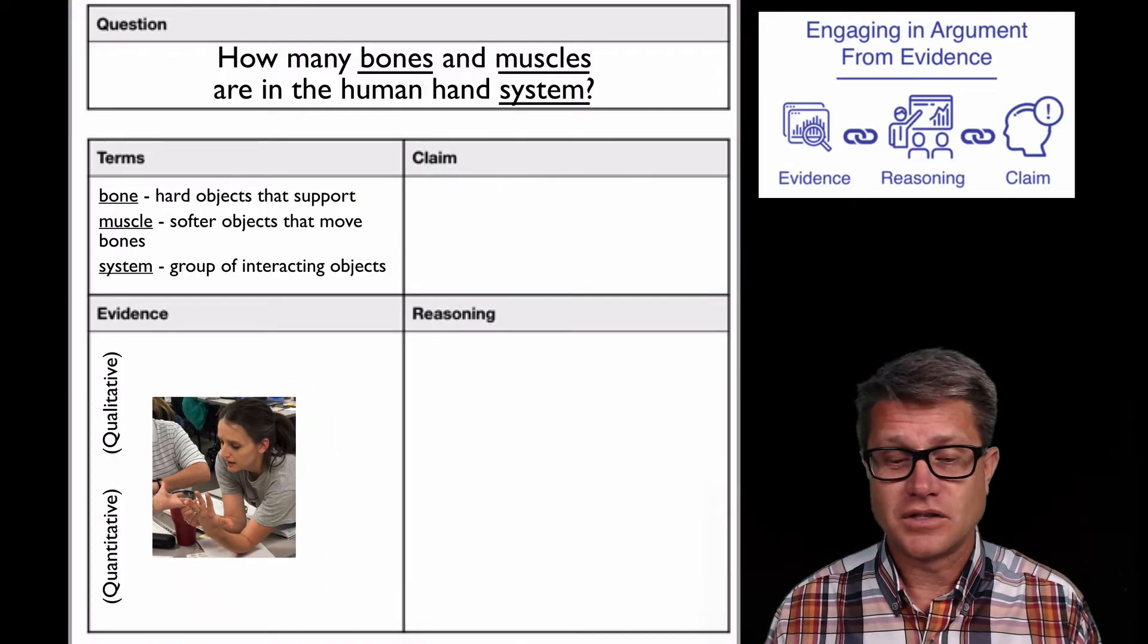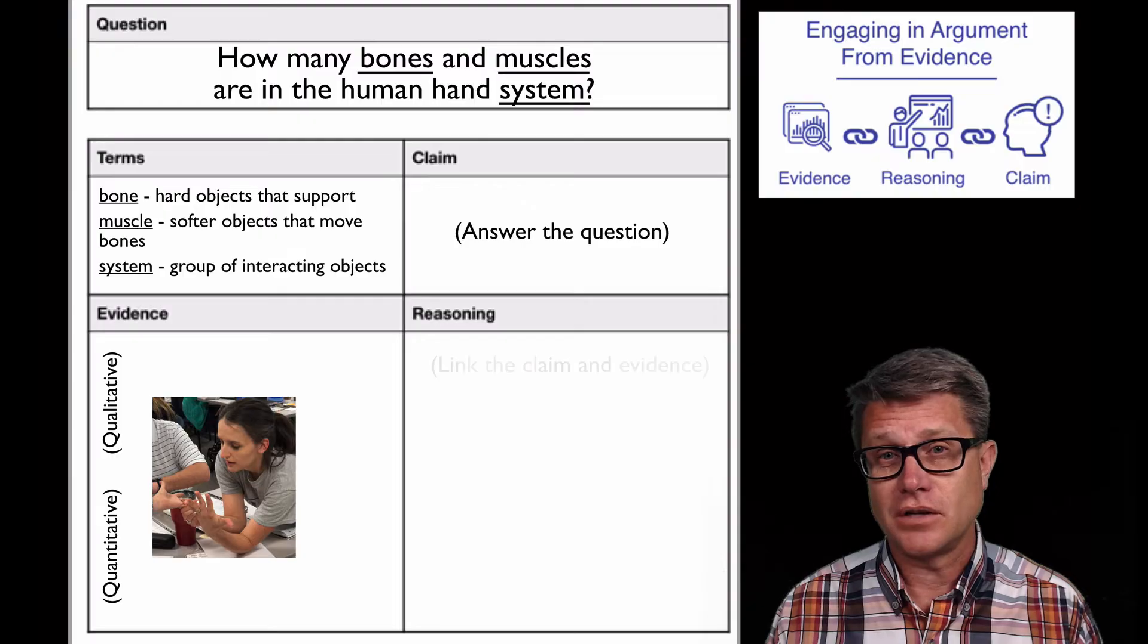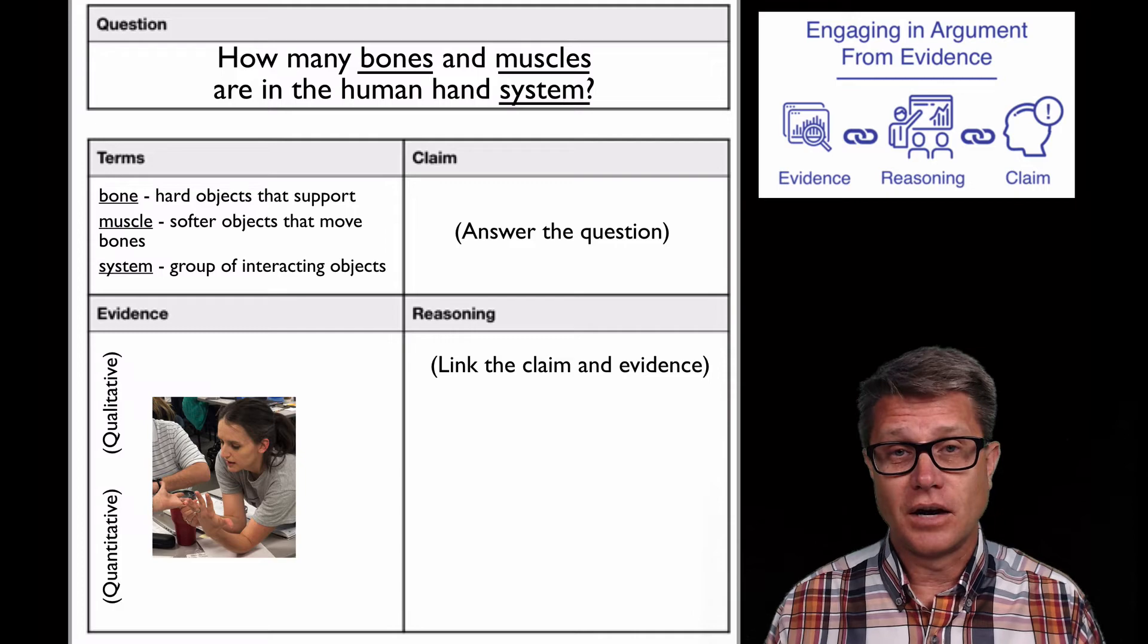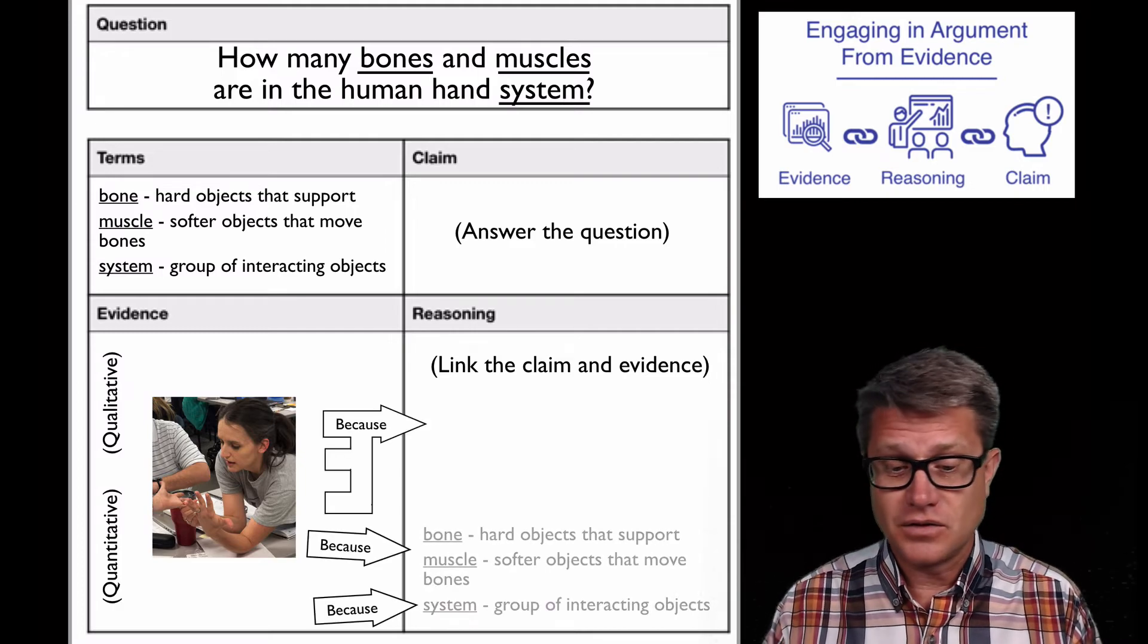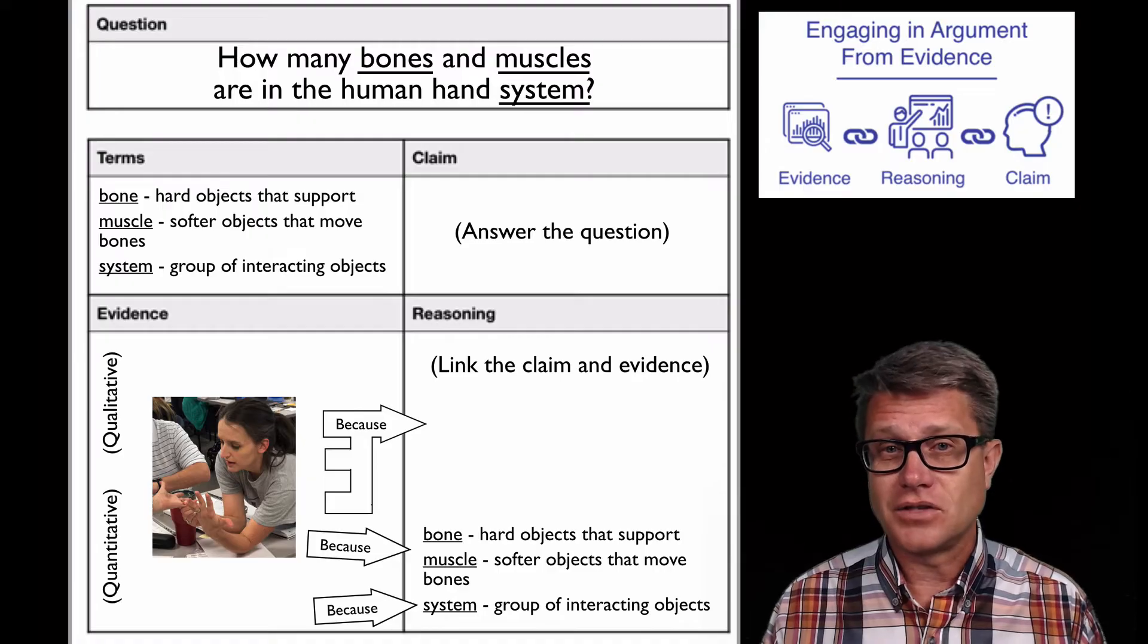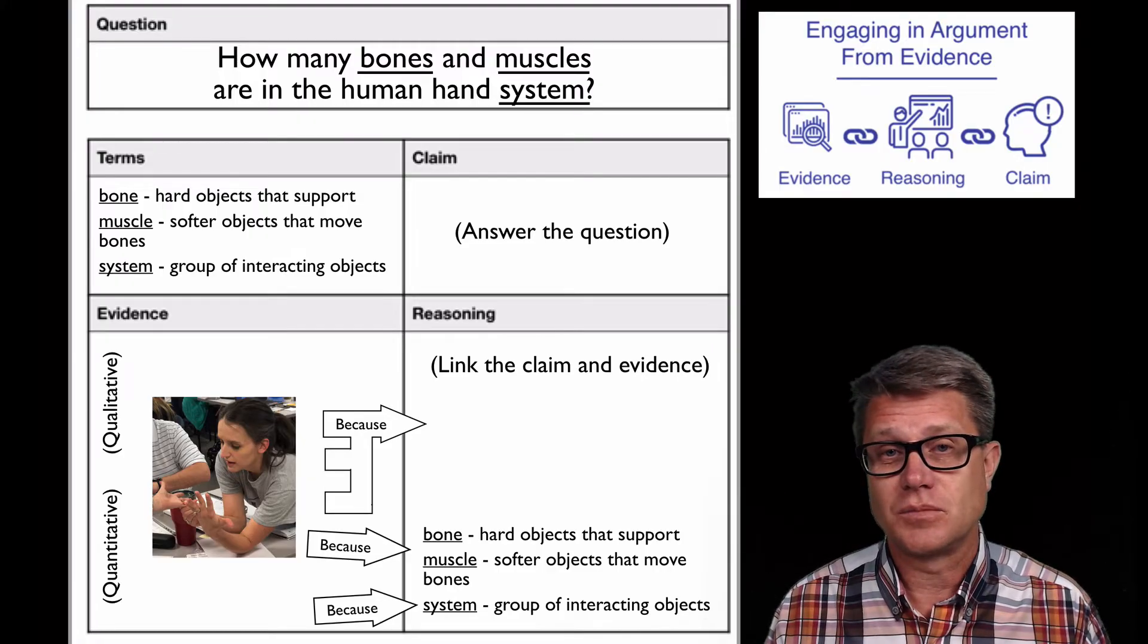Once they've gathered all that evidence, then they make a claim which is essentially an answer to the question. And then they're going to come up with reasoning. So you're going to link the claim to the evidence itself. Now when you're doing that reasoning, you're going to use these because statements from the evidence and tying it to those definitions. This is where those definitions become really important.